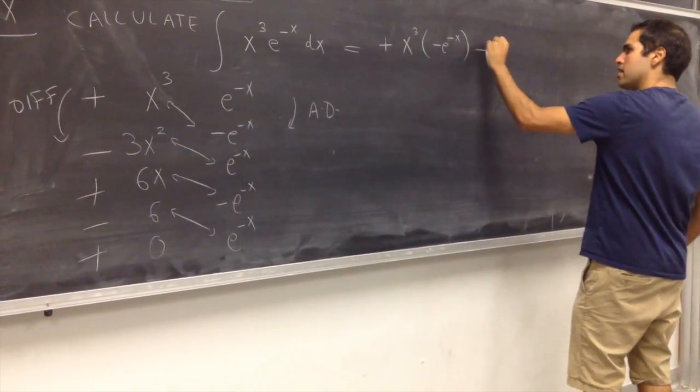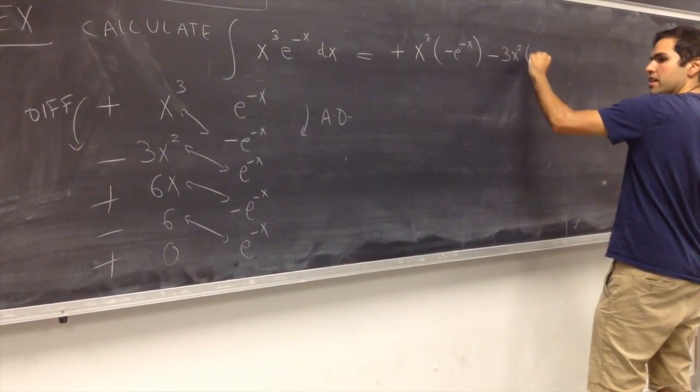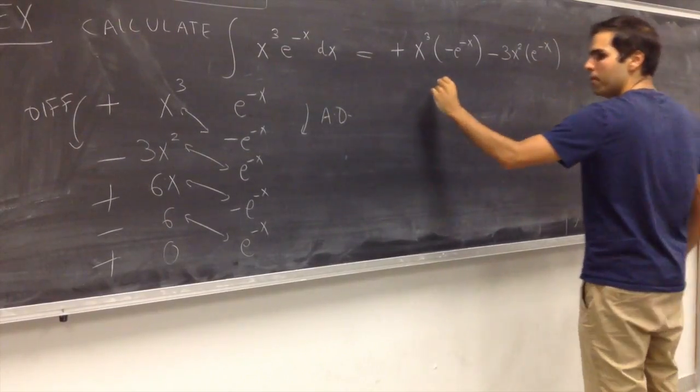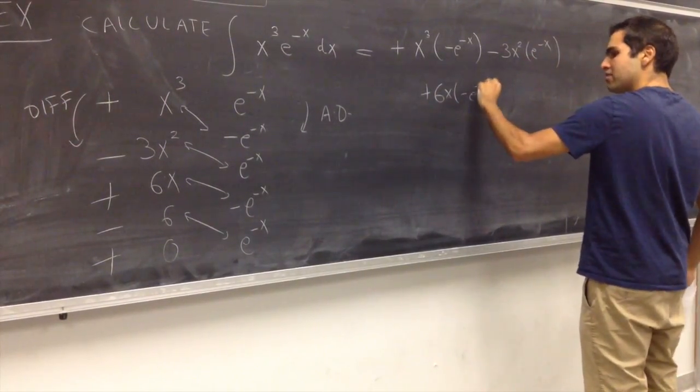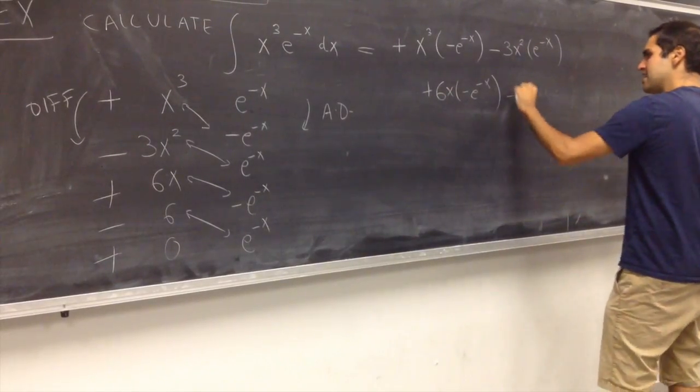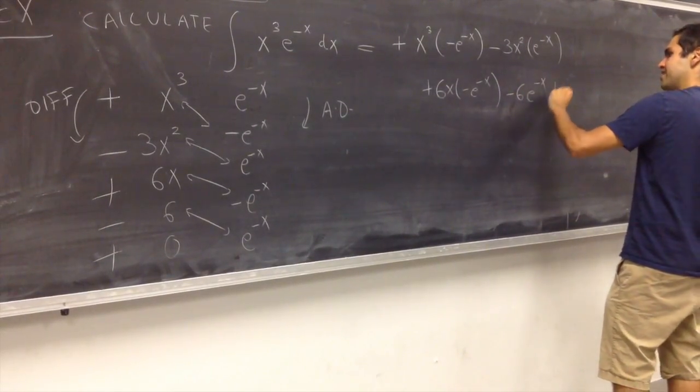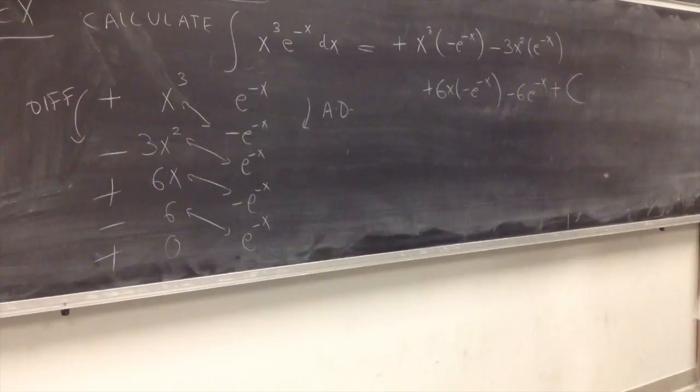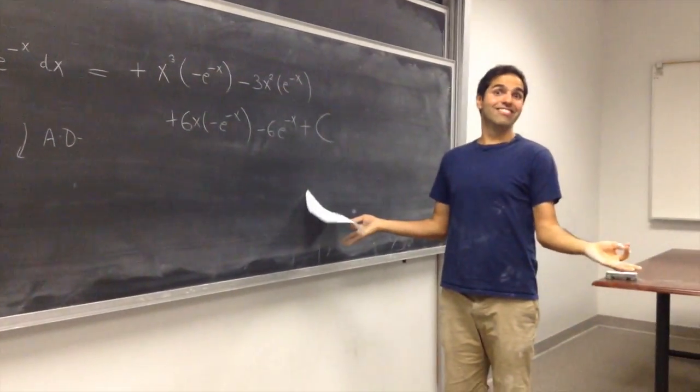So, you get plus x cubed minus e to the minus x, minus 3x squared e to the minus x, plus 6x minus e to the minus x, minus 6 e to the minus x, plus a constant. And guess what? That gives you the answer. Wow.